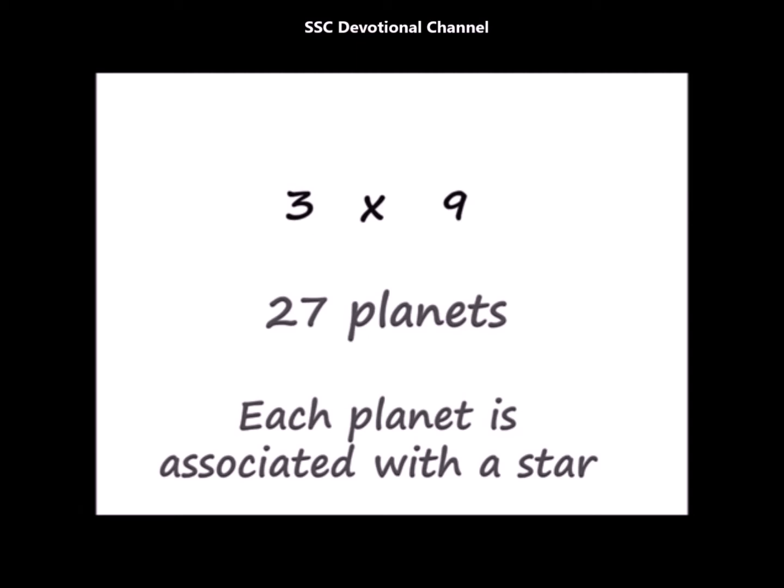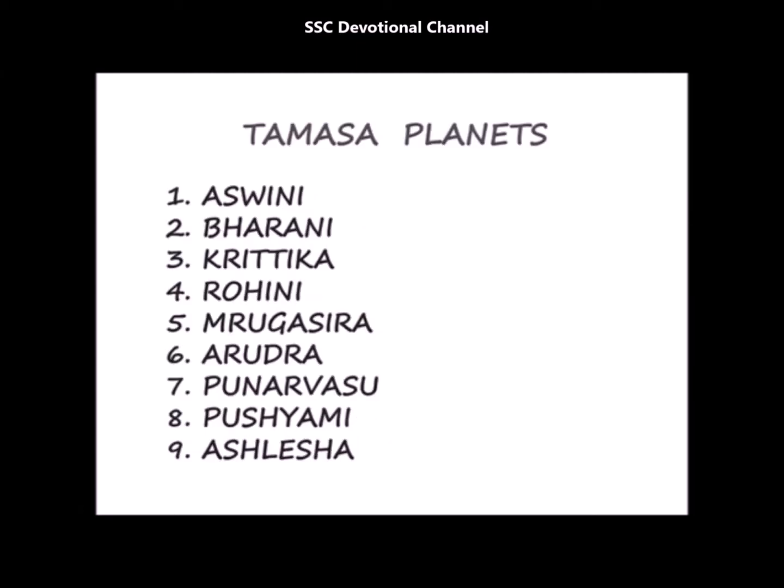The tamasa stars are the first nine stars. The first is Ashwini, second is Bharani, third is Kruttika, fourth is Rohini, fifth is Mrugasira, sixth is Arudra, seventh is Punarvasu, eighth is Pushyami, and ninth is Aslesha. Stars one to nine are tamasa stars — they are very aggressive and fiery, wanting everything in their control.